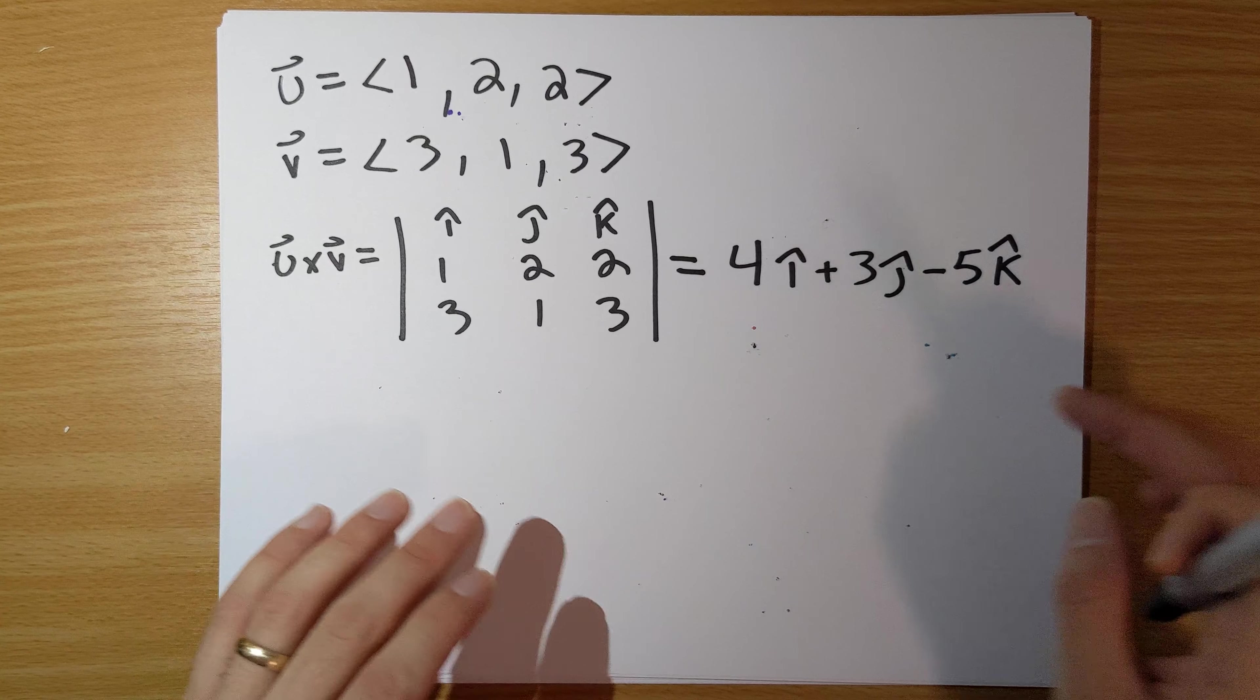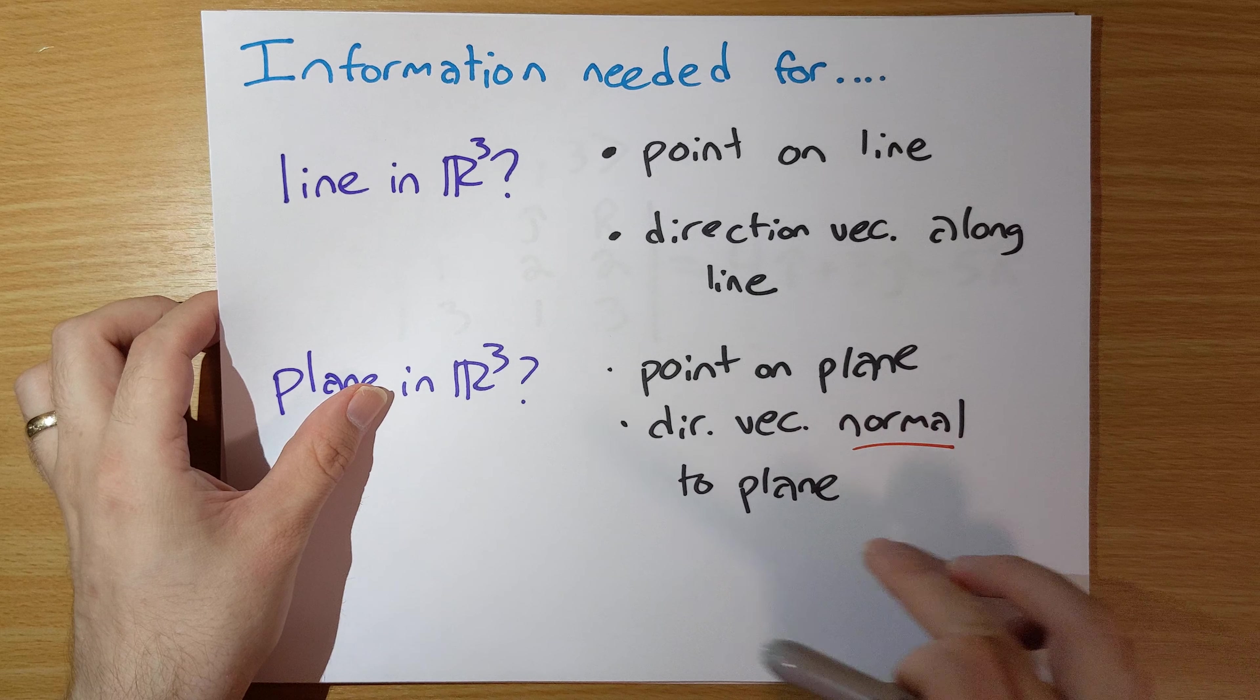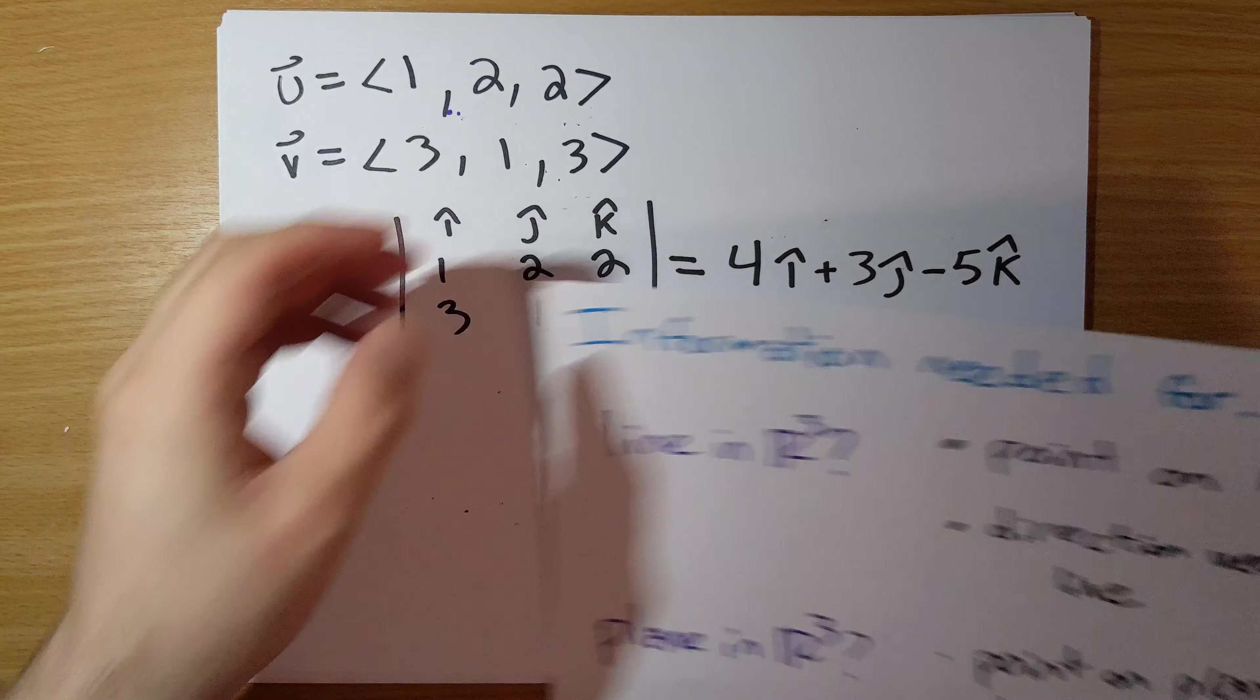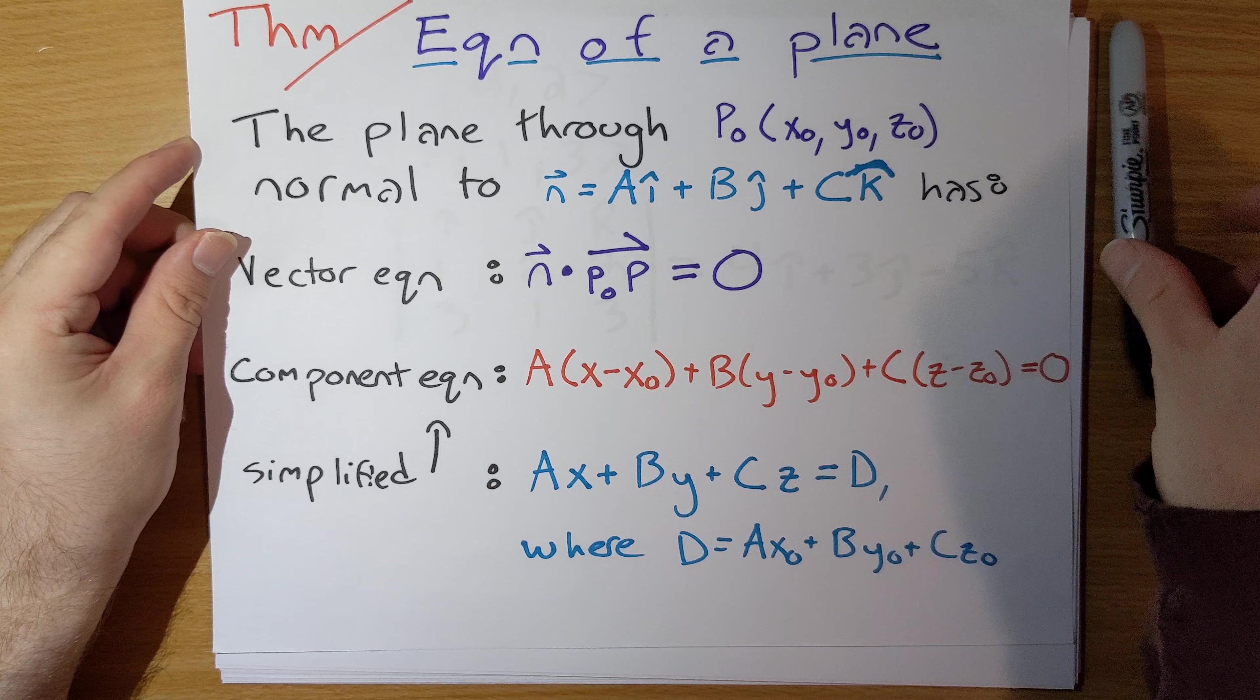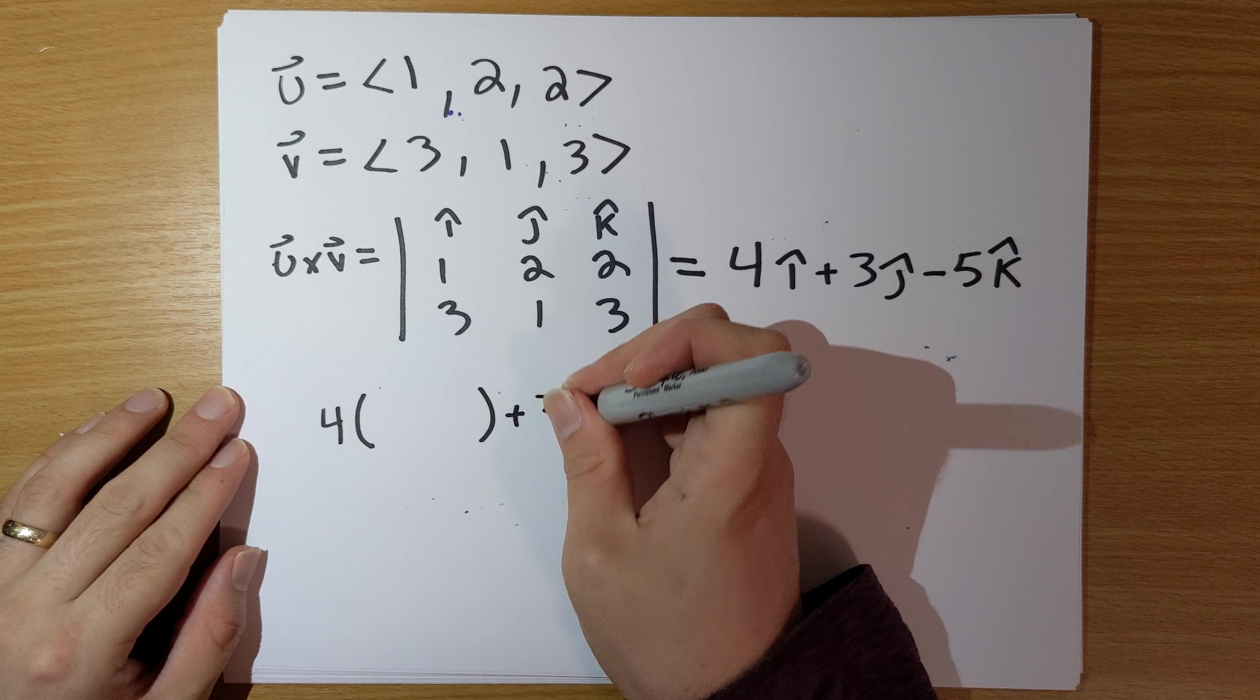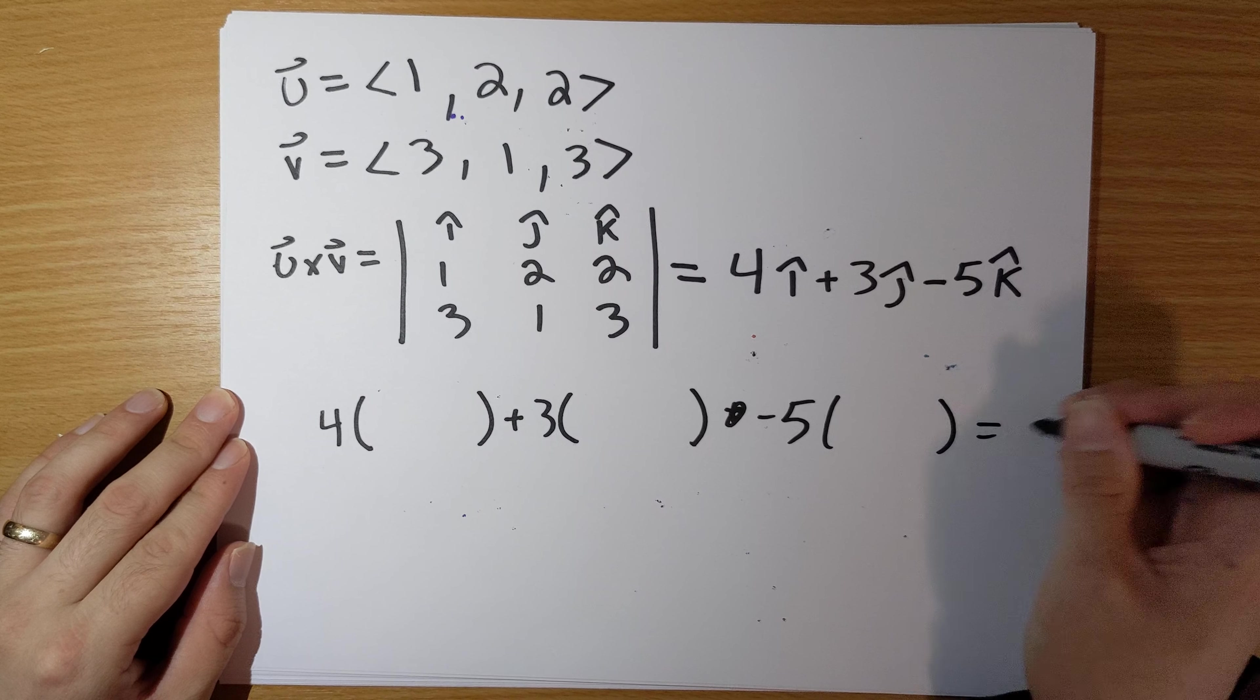And so, now, great, we have, what do we need here? Now, we have a direction vector that's normal to our plane. And do we have a point? Well, we have three points. We can use any one of these three points that we want to. I'm going to use point P1. You could use P2 or P3 here. But let's do it as the component equation right here. And so, it's going to be 4 times something plus 3 times something minus 5 times something is equal to 0.